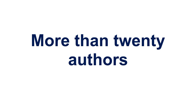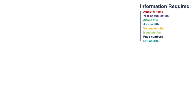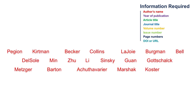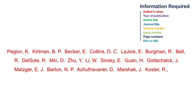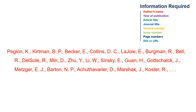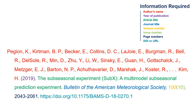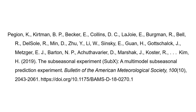If you happen to have a journal article with more than twenty authors, list the first nineteen authors using last name, comma, initials, and separate each author name with a comma. After the nineteenth author, use an ellipsis in place of the remaining authors' names. Do not include an ampersand. End your list of authors with the name of the final author listed in your article. There should only be twenty names listed in total. You can then proceed to complete the rest of the citation according to the steps outlined earlier in the video. An APA citation for a journal article with more than twenty authors will look like this.